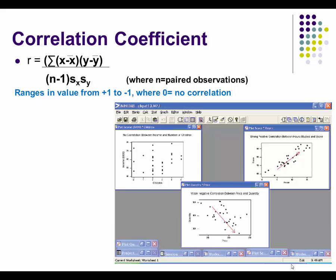For the scatter diagram in the middle, notice the red downward sloping line better fits the data than an upward sloping line. The right-hand diagram would be better described by an upward sloping line. Notice that the x, y coordinates in the right-hand diagram are closer together compared to the middle diagram. For the diagram on the left, a vertical line just as easily as a horizontal line could be used to describe the data, so we conclude there is no correlation.